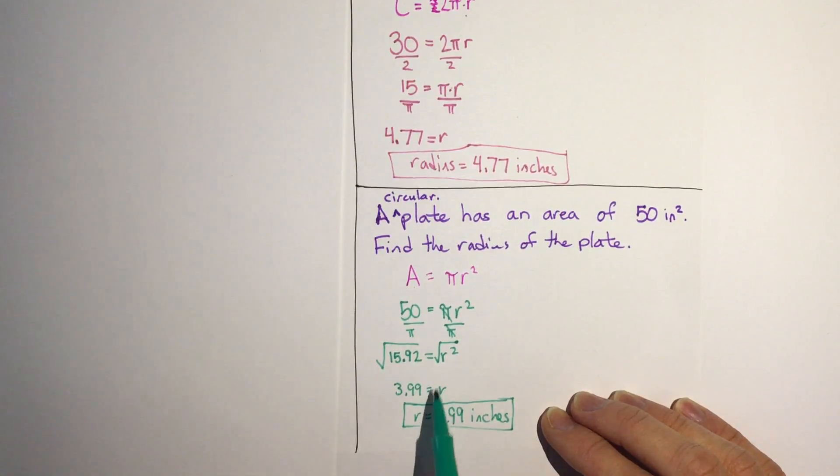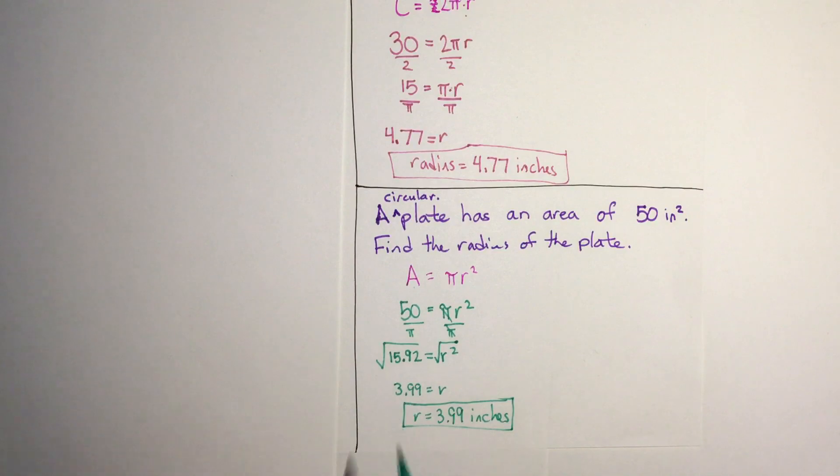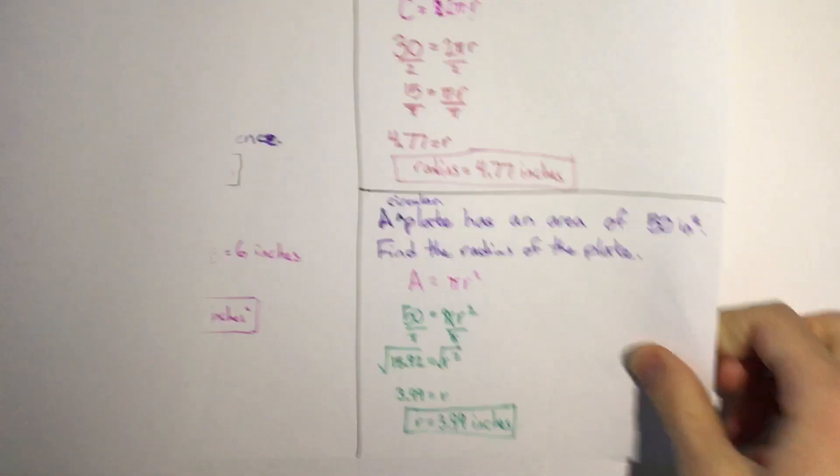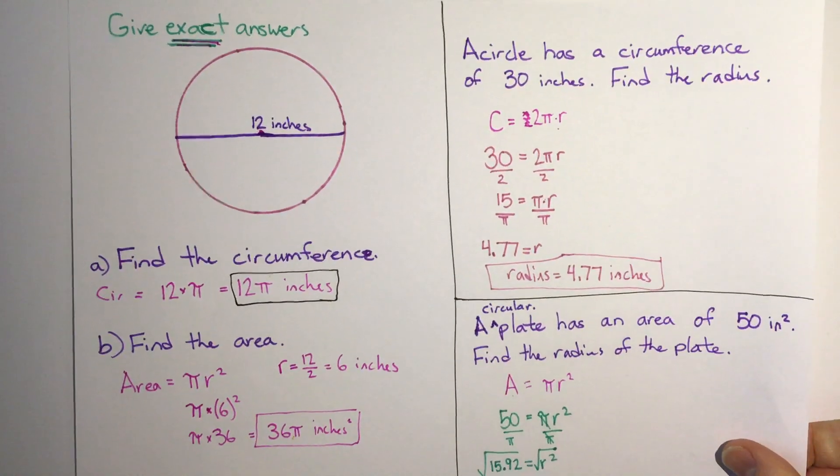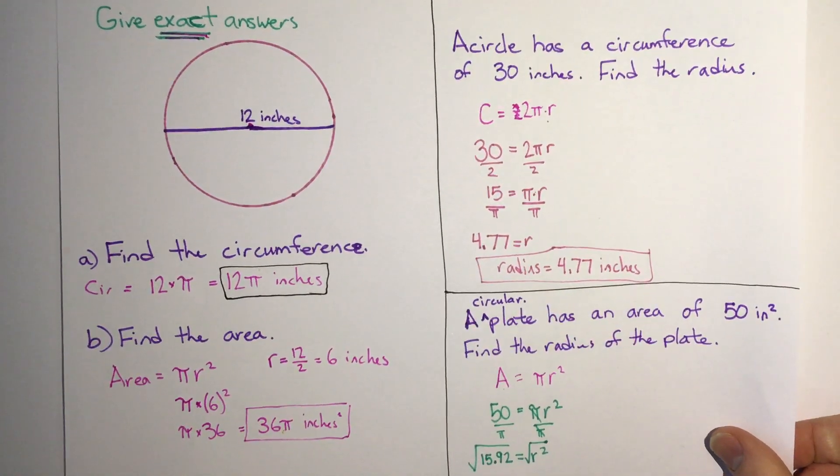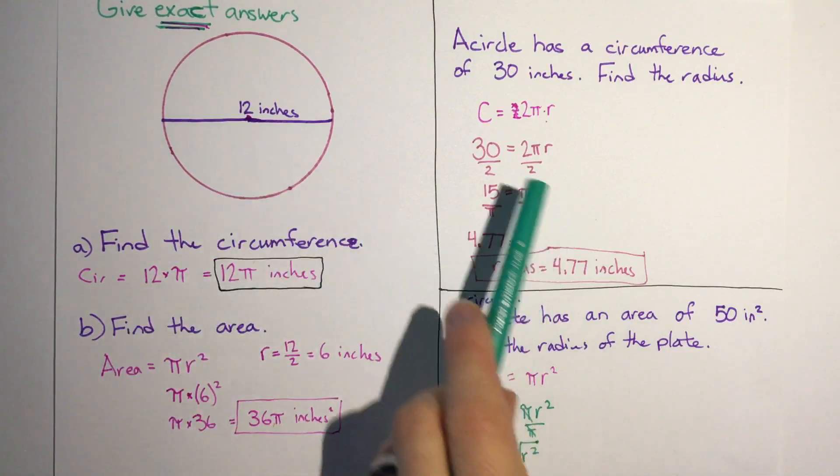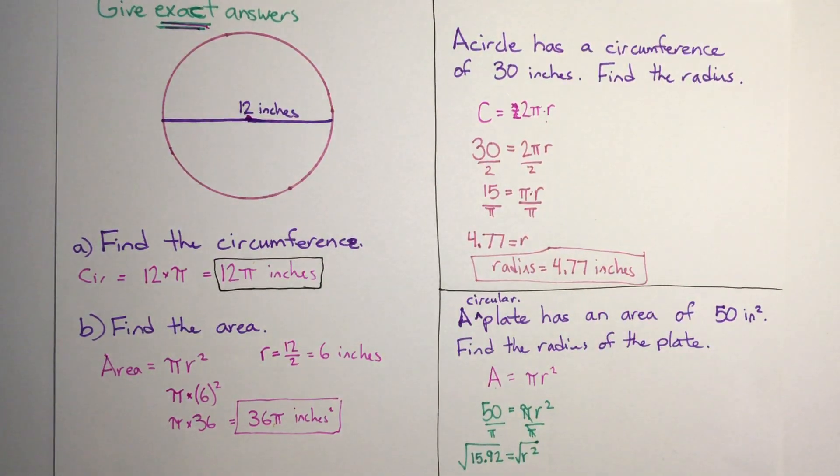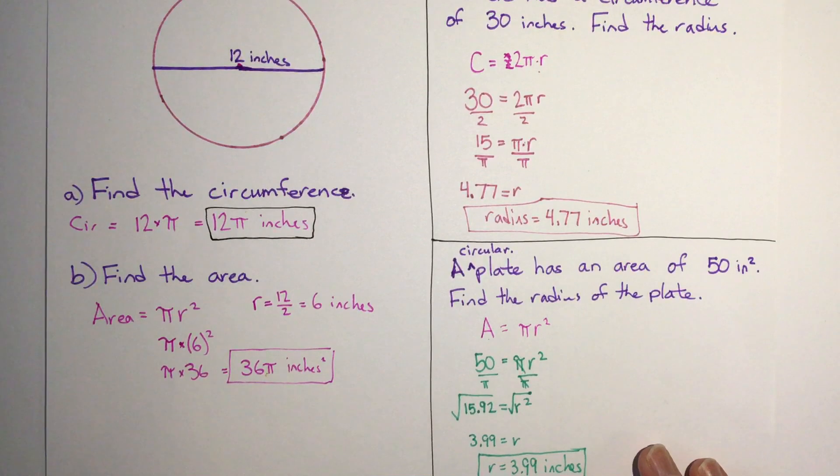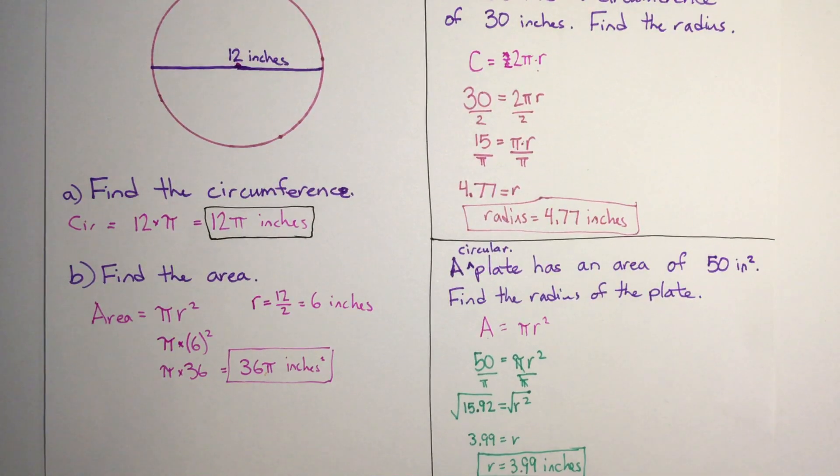It's an important step to remember that square root part, otherwise we'll end up with a much bigger number. But we can see all the problems here, we use the same formulas - we might be given the radius, the diameter, circumference, or area, but no matter which we're given, we can use the formulas to be able to find the missing information.